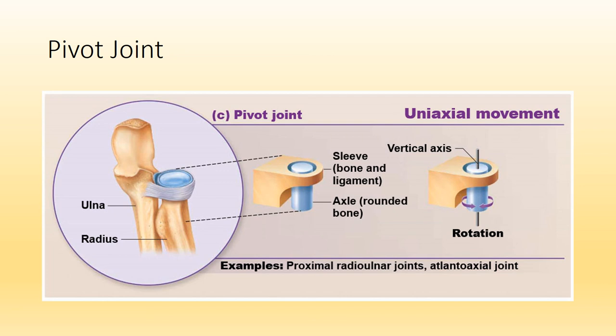A pivot joint allows for rotation. Great examples are the joint between C1 and C2, also known as the atlantoaxial joint. Another example is the proximal radio-ulnar joint, which is close to the elbow — this is the joint that allows for supination and pronation in the forearm, or rotation of the radius about the ulna.